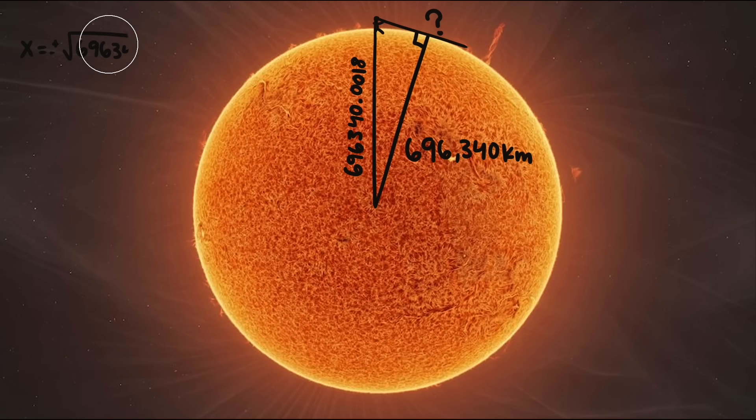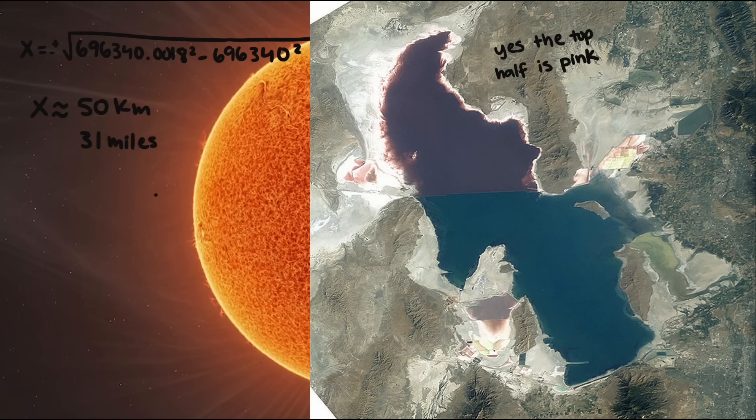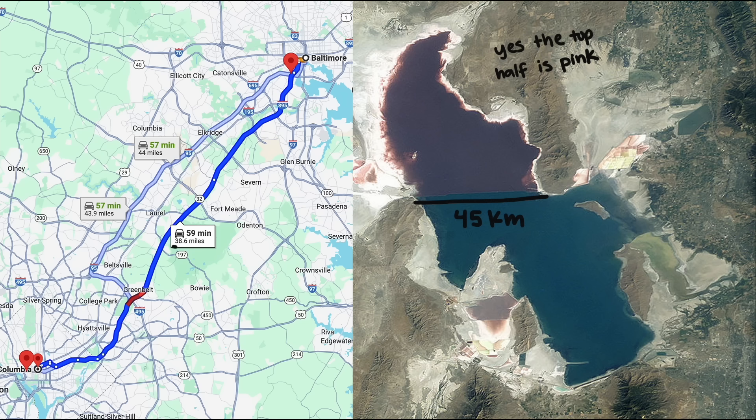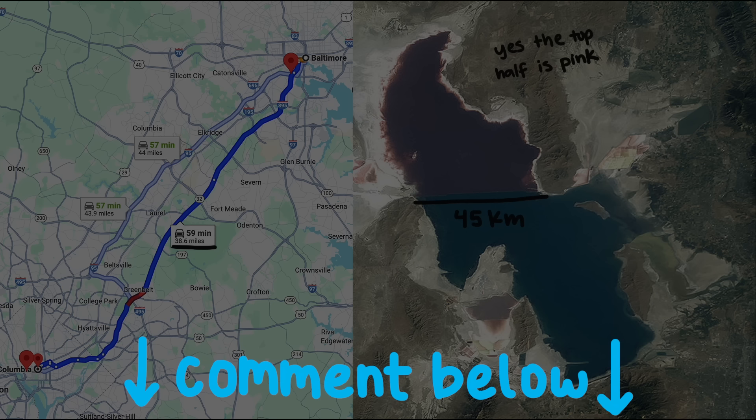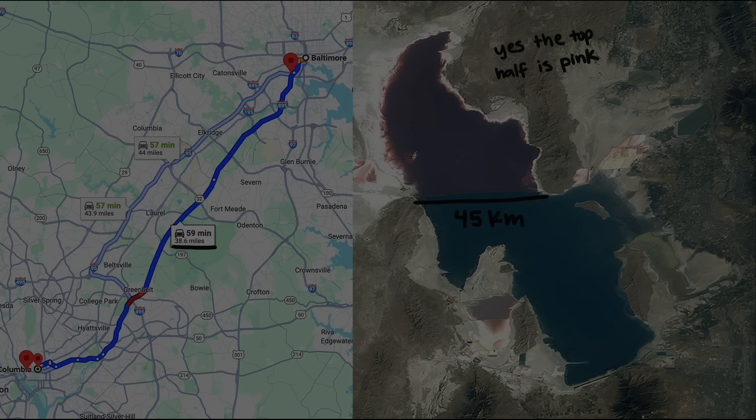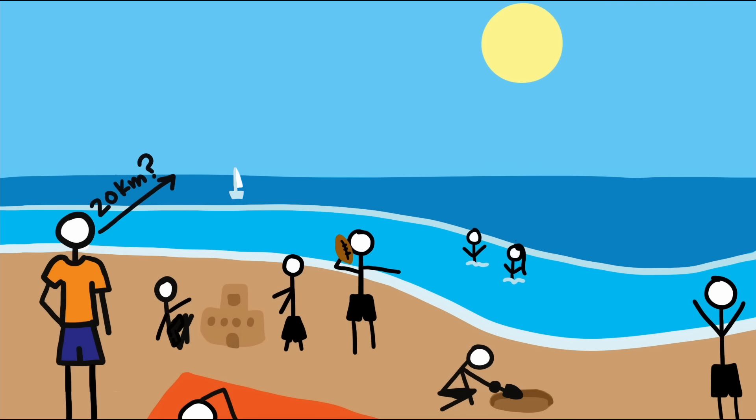Doing some quick math gives us just over 50 kilometers, or about 31 miles. That's about the width of the Great Salt Lake here in Utah, or the distance between Baltimore and Washington, D.C. Tell us in the comments what landmarks near you are about the same distance.